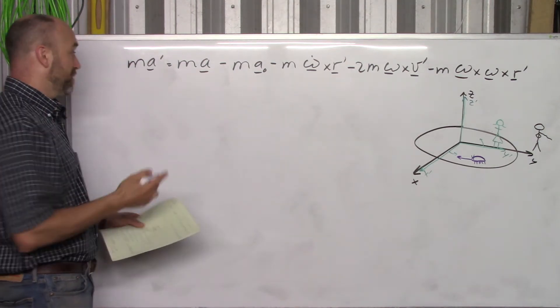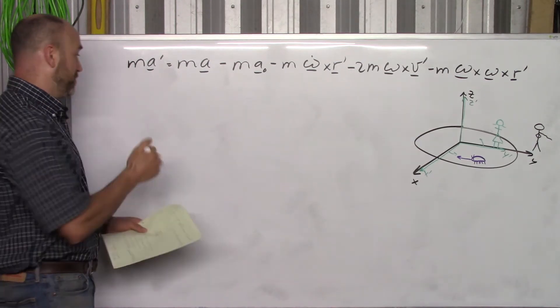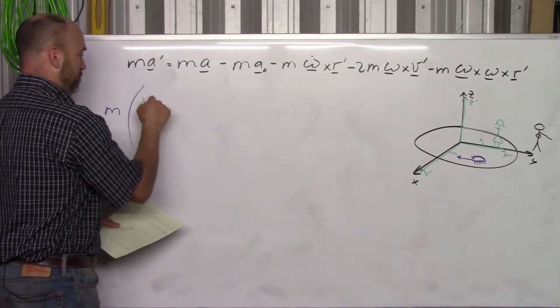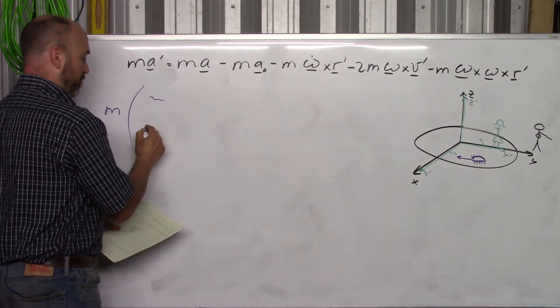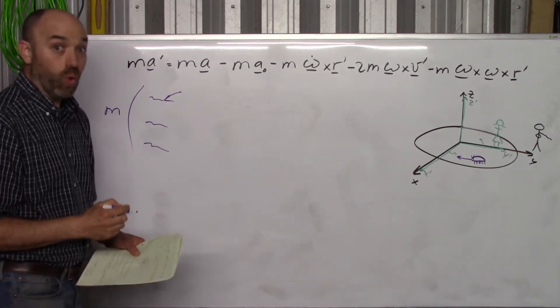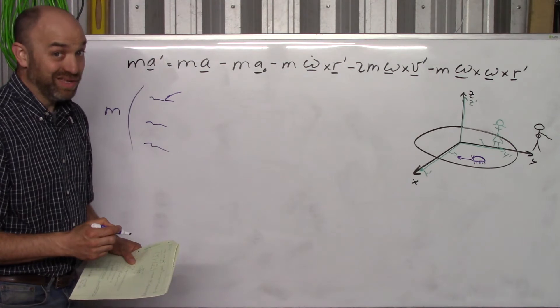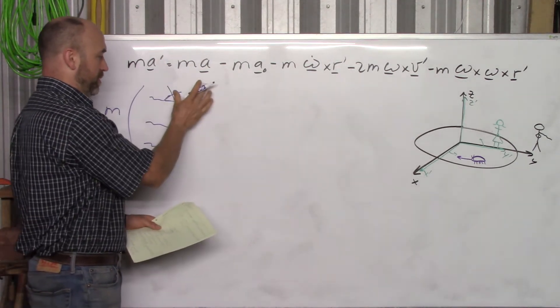Remember in cylindrical coordinates you're going to have rho, phi, z. So you're going to have M times the rho part here—rho, phi, and z. And the rho part is going to be towards the center, negative, and it's going to be V squared over r. So that's going to go right there.